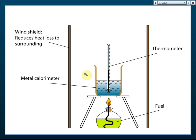The apparatus setup is as follows: we have the fuel in a lamp. Above the lamp we have a metal calorimeter — usually copper, because copper is a good heat conductor. Inside the calorimeter is water. When we light the lamp, it burns the fuel; the metal calorimeter and water absorb the thermal energy, and the temperature increases. We measure the mass of fuel burned using a balance, and use Q = mcΔθ to calculate the heat energy absorbed.